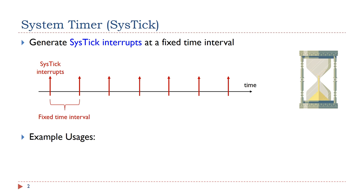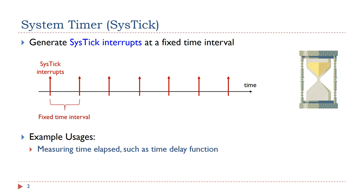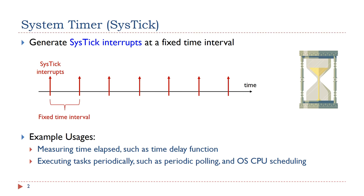Here I give two example applications of the system timer. The first example is that the system timer can measure time elapsed. For instance, software can use the system timer to implement a time delay function. The second example is that we can execute some specific tasks periodically. For instance, we can use the system timer to implement periodic polling to check peripheral status or read external inputs with a regular timed interval.